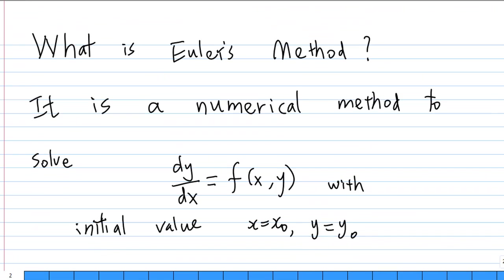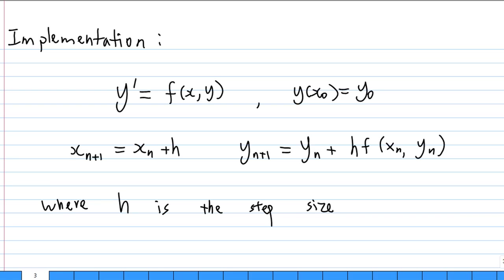What is Euler's method? It is a numerical method to solve a first-order differential equation dy/dx equal to f(x, y) with initial value x equal to x₀, y equal to y₀. To implement Euler's method, given y' equal to f(x, y) and initial value y(x₀) equal to y₀, we obtain the next values using the iteration: x_{n+1} = x_n + h and y_{n+1} = y_n + h·f(x_n, y_n), where h is the step size.